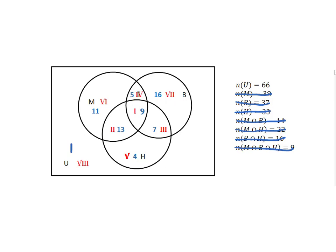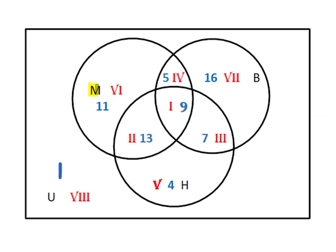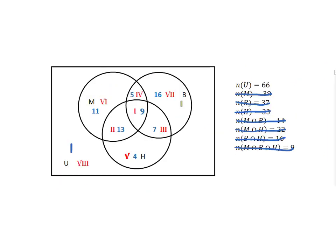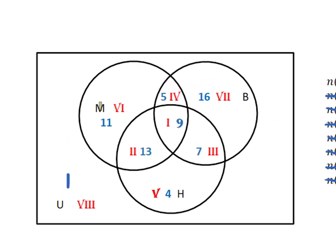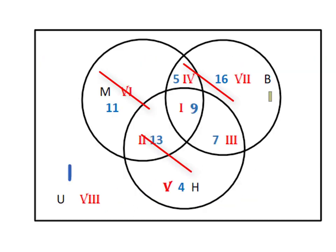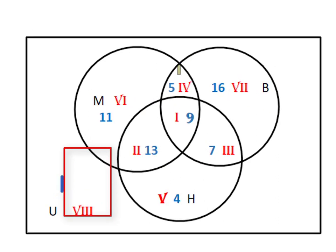Set M represents the students who like Mozart. Set B represents the students who like Beethoven. And set H represents the students who like Haydn. So if you were asked how many of these students like none of these composers, then they're asking you about region eight, and you would say one.